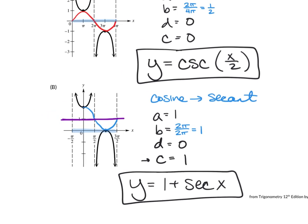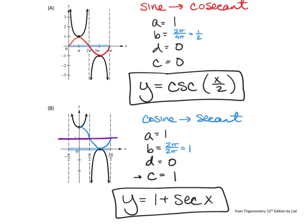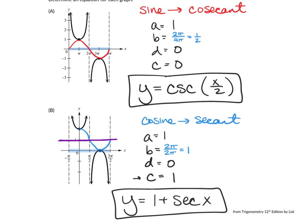The main thing to think about with secant and cosecant is what function appears invisibly in between the bowls of the graph. Here one sees a sine function, and in the other a cosine function — and that tells you whether you have cosecant or secant.